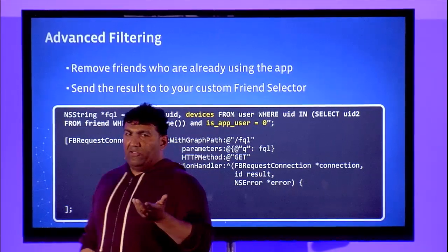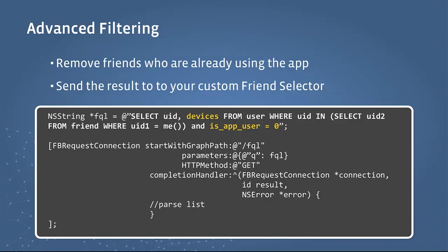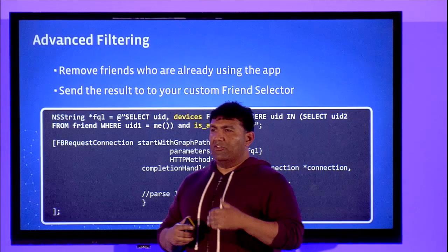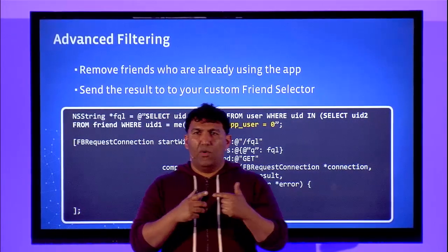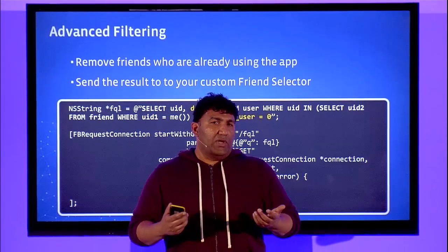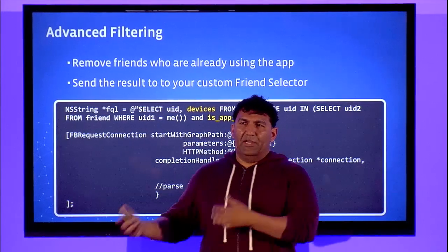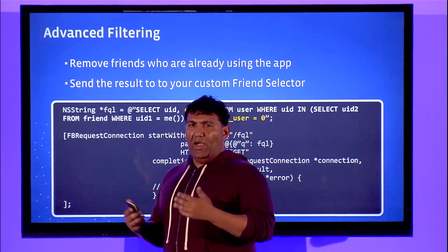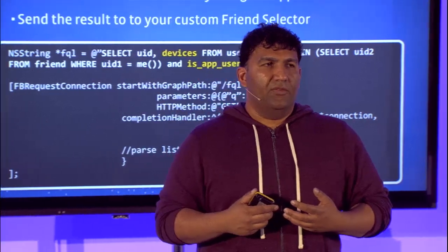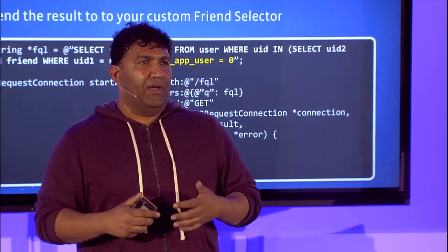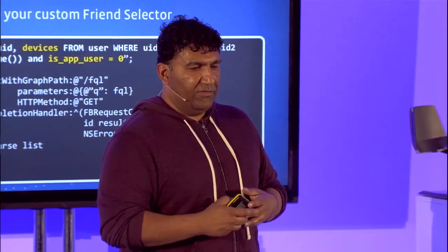Because you're just doing a simple query on the Graph API, you can limit or adjust that query however you see fit. A common adjustment is to only query for people who are already playing your game — in which case you want to do a challenge where people know each other or are already players. Or you can limit the query to people who haven't played your game, which is a great way to do an invitation and recruit new people.